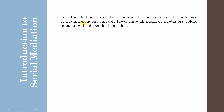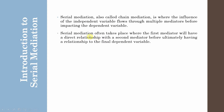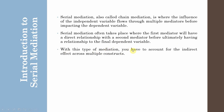In this session, we are going to look into how to assess serial mediation whereby there is a chain of relationships between different variables. Serial mediation often takes place where the first mediator has a direct relationship with the second mediator before ultimately having a relationship to the final dependent variable. With this type of mediation, you have to account for indirect effects across multiple constructs — your indirect impact from your IV to your DV flows through multiple variables.